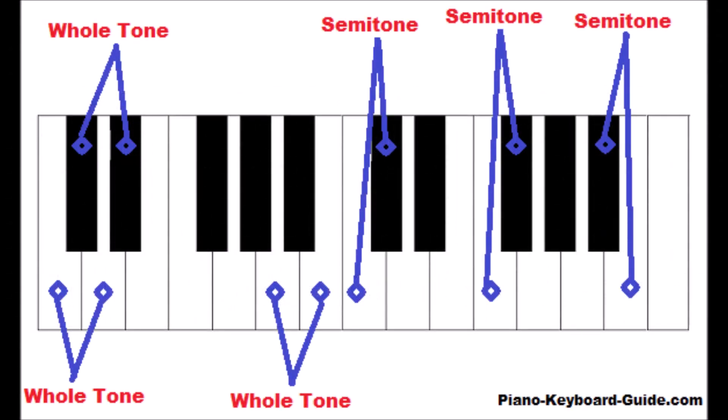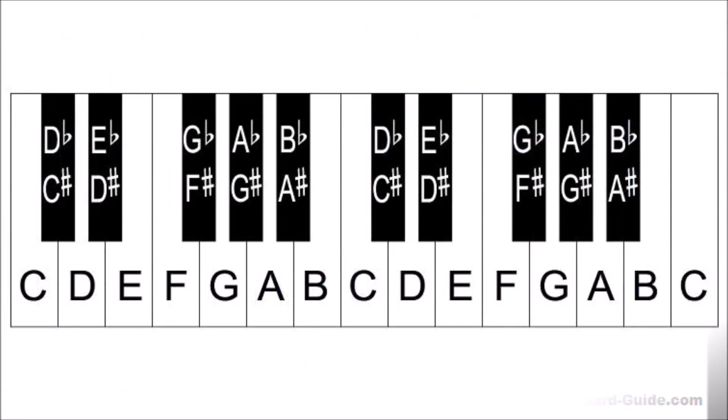A whole tone is equal to two semitones. To form a whole tone on a piano, you skip a key. For instance, C to D is a whole tone. D to E is a whole tone. And E to F sharp is a whole tone. You simply skip one key, whether the next key is black or white.